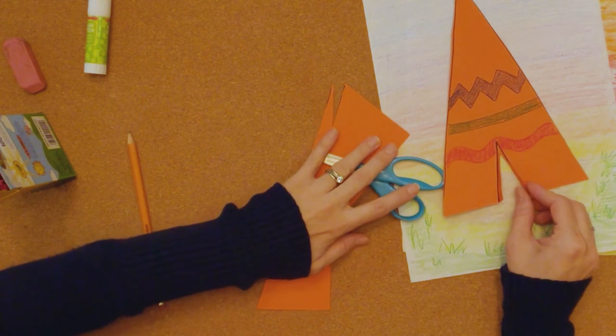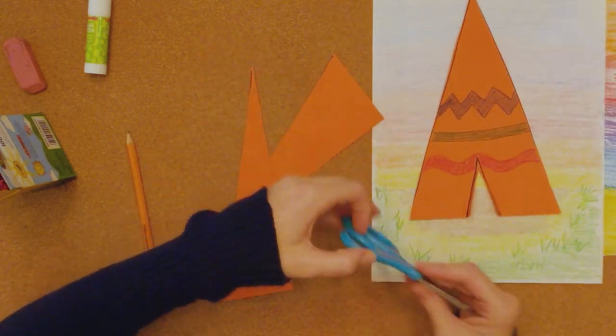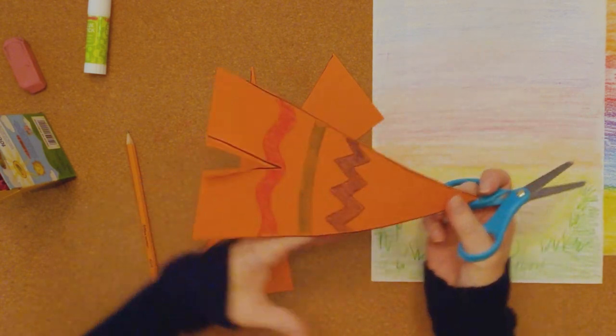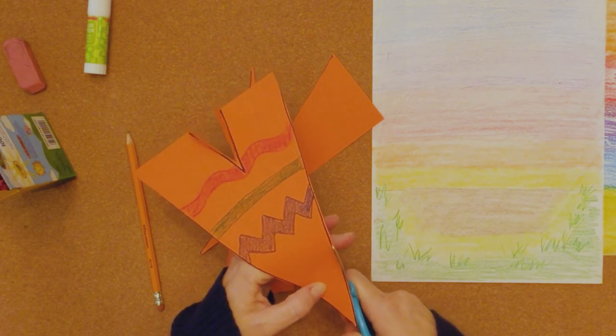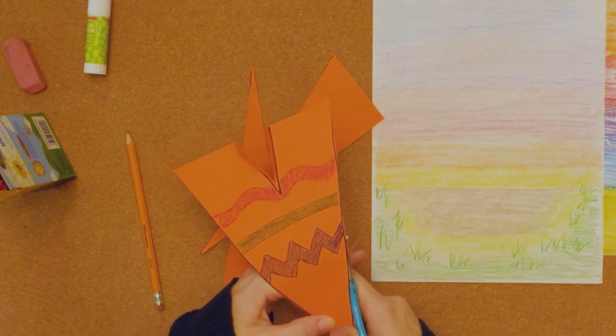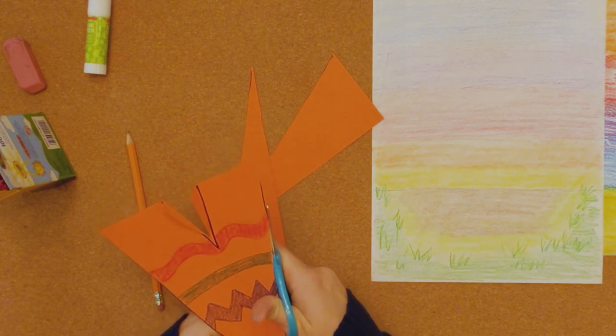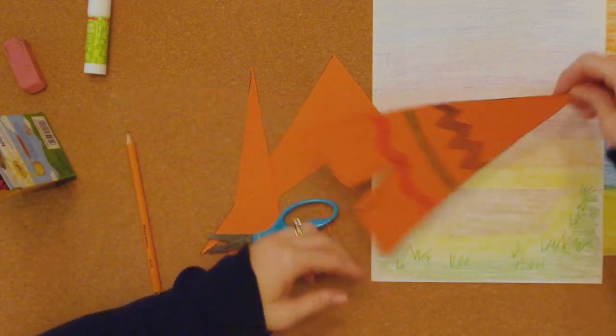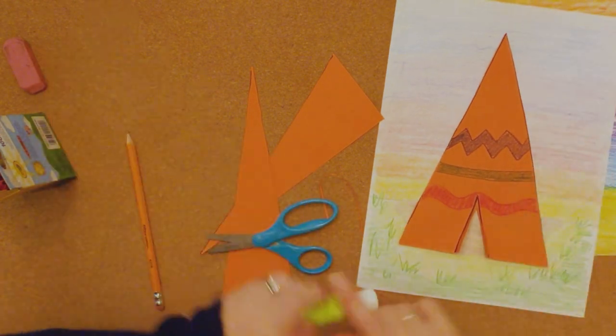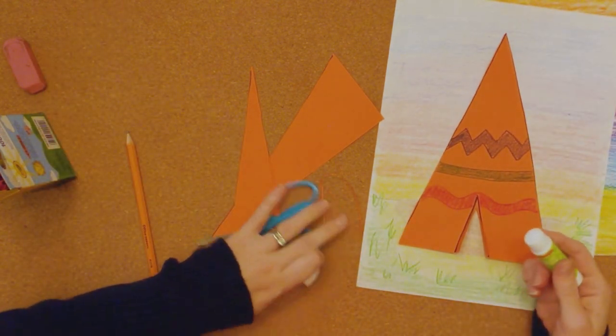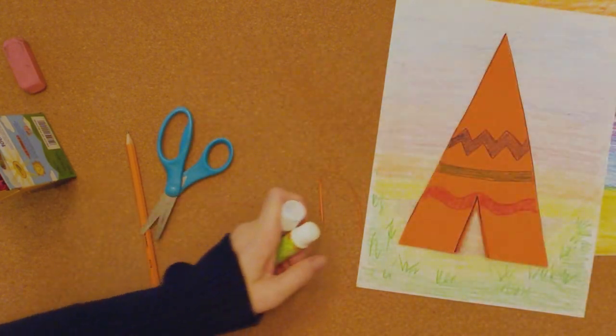Okay, now our teepees are ready to go onto our paper. I'm going to clean this up a little bit. Okay, now with our glue stick, we're going to glue it into place and I'm going to leave some room on the top to add the sticks at the top of the teepee. So let's go ahead and get our glue stick out.